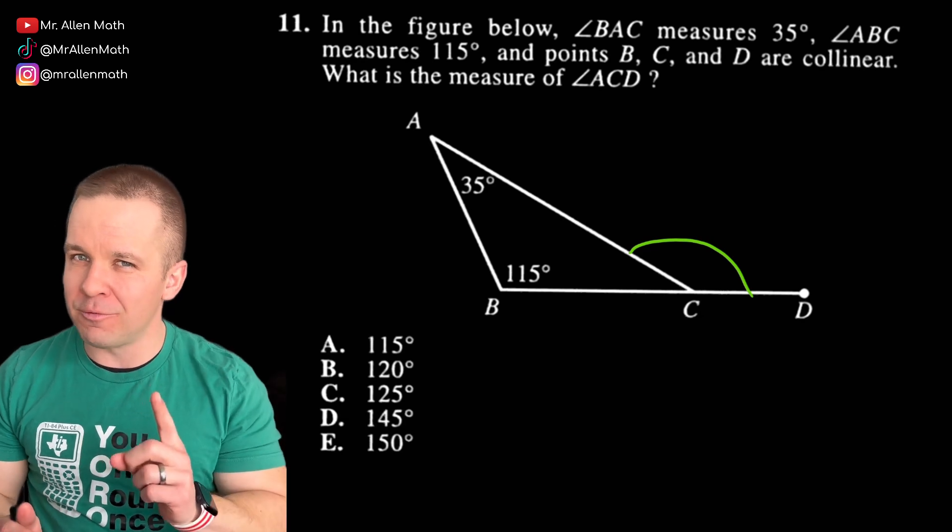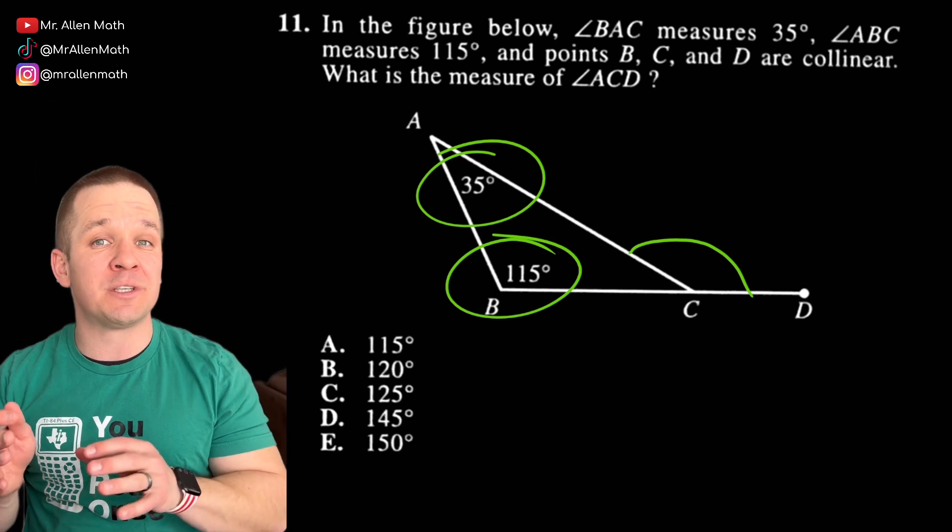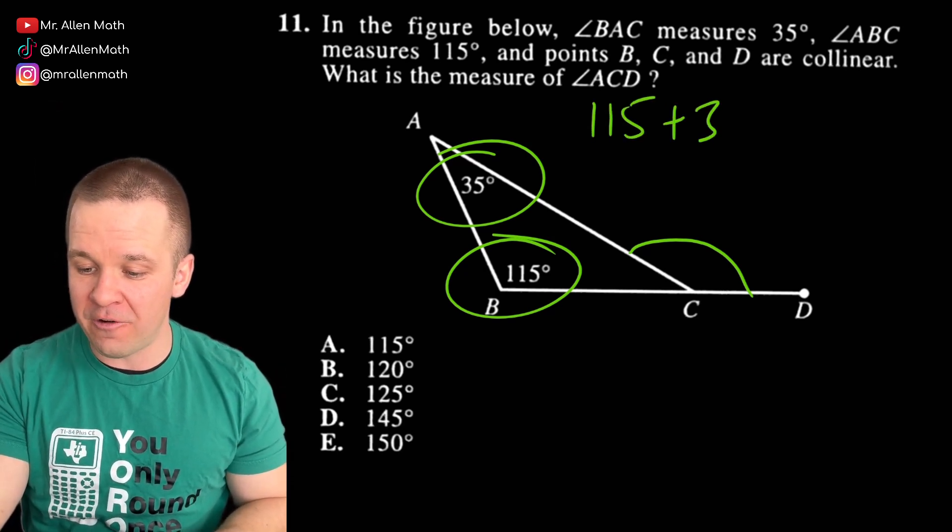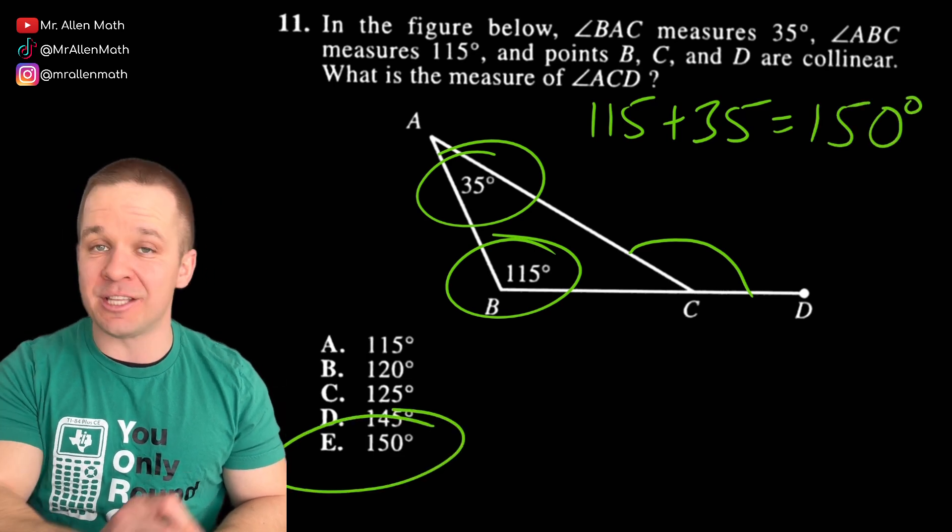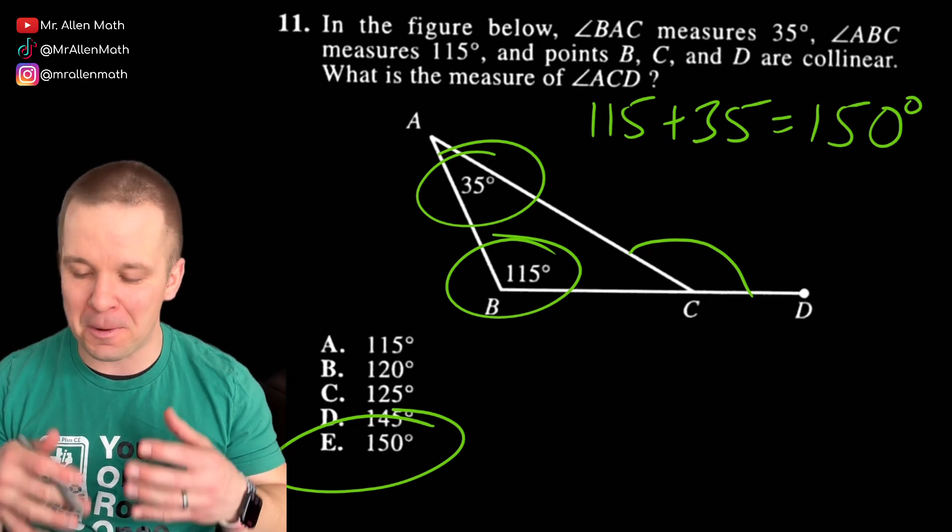And if you remember something from geometry, it is equal to the sum of the two remote interior angles, the ones that are further from it. So if I add up 115 and the 35, I end up with 150 degrees. Bingo, bingo, done. The answer is E.